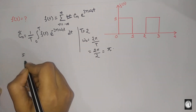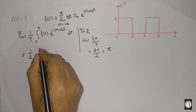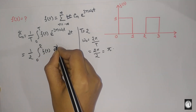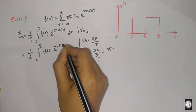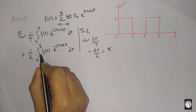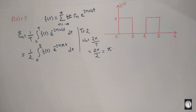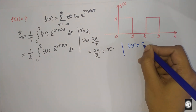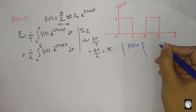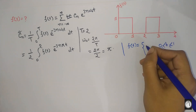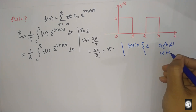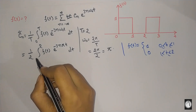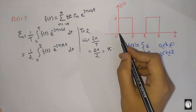આ સૂત્ર ચલે — cn = 1/2 integration 0 to 2 of f(t) times e to the power minus jnπt dt. ફાંક્શન f(t) ને 0 to 2 ઇંટેગ્રેટ કરવું છે.